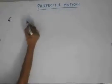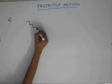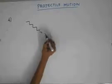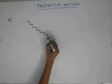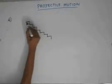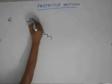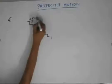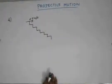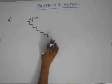In the fourth problem, we have a staircase. A particle is projected from this point horizontally with a velocity of 2.5 meters per second. We are asked to find the number of stairs the particle covers before it reaches the ground.